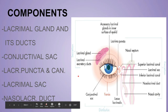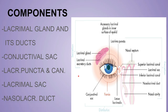Let's discuss the main things briefly so it will be easier to understand in detail. First, the lacrimal gland and its ducts. The conjunctival sac is the space between the eyelid and the conjunctiva of the eye. The lacrimal puncta are small holes visible on the medial part of the eye.